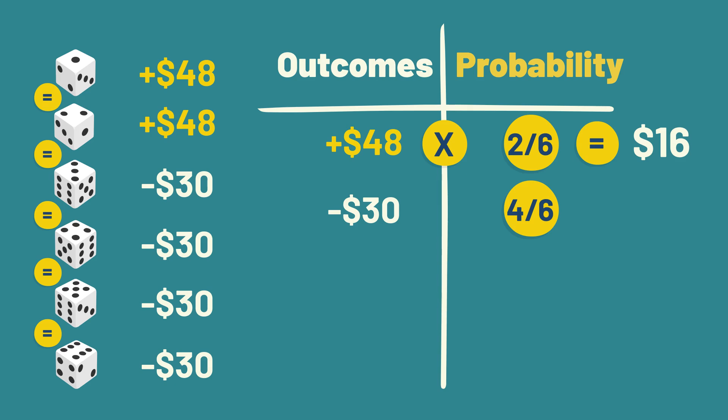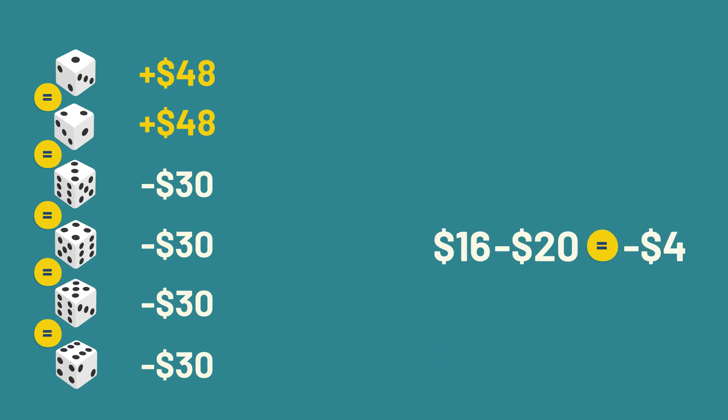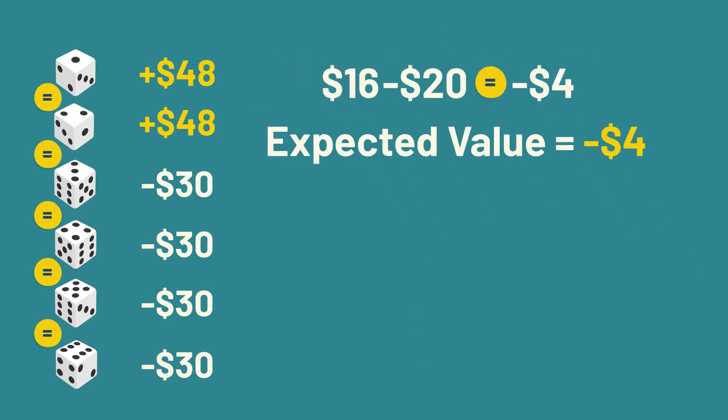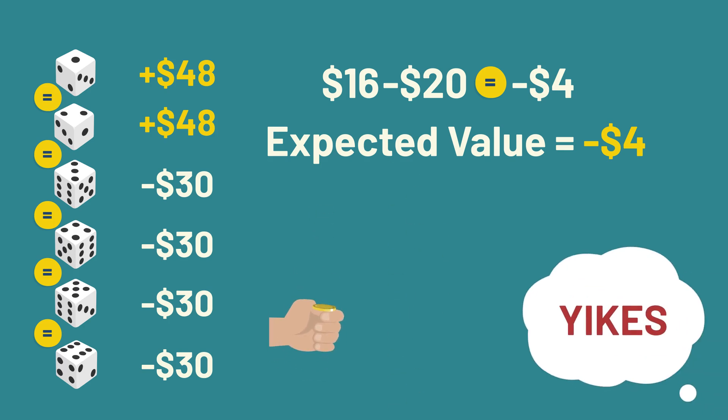and negative 30 times 4 sixths is negative 20. We add them together and get negative 4. So, our expected value is negative 4. On average, we will lose $4 for each play of this game.